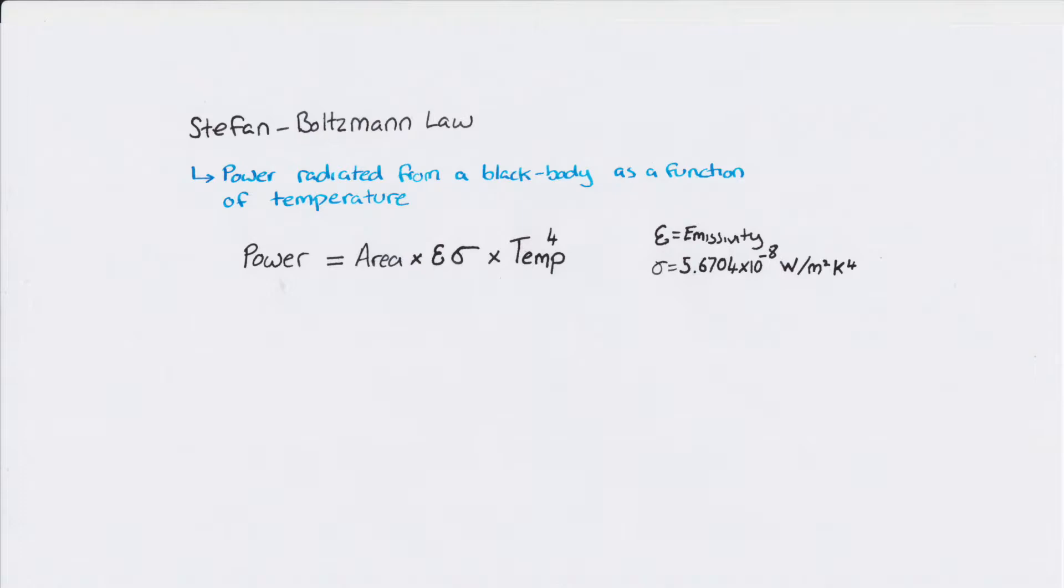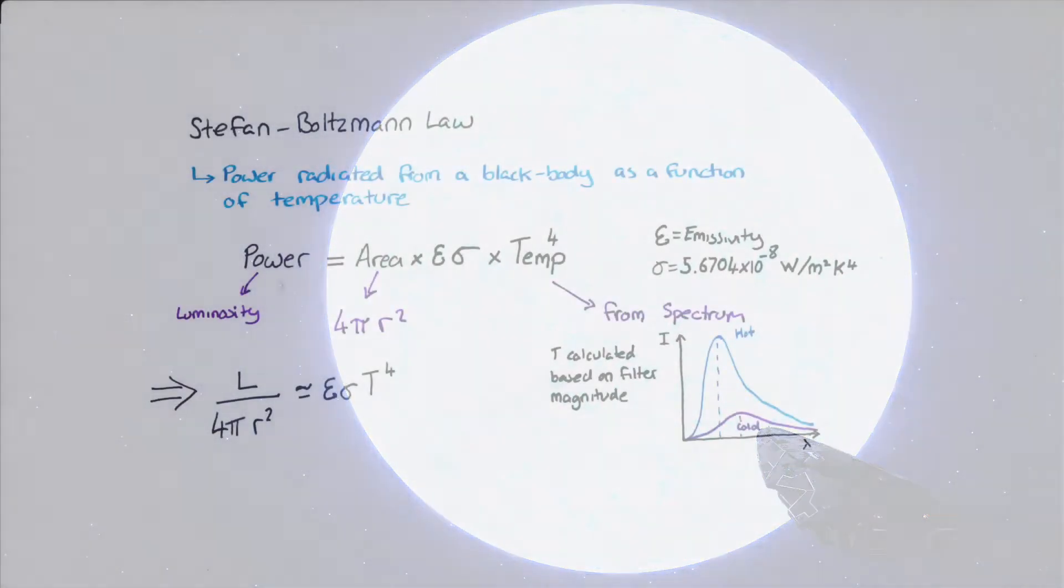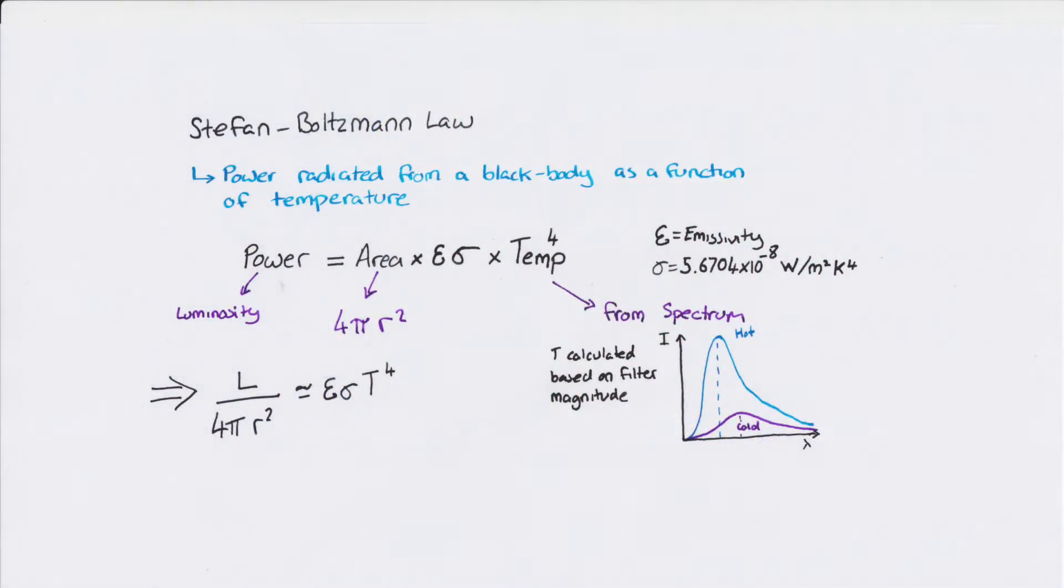The Stefan-Boltzmann equation relates the total photon power output from a black body as a function of temperature and area. We can measure this on Earth, and know that it works reasonably well. For a star, assuming they are approximately spherical, we can calculate the surface area, 4πr².